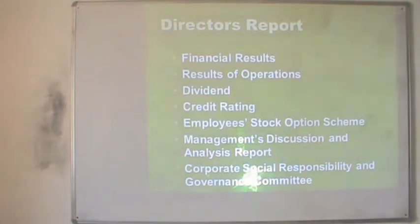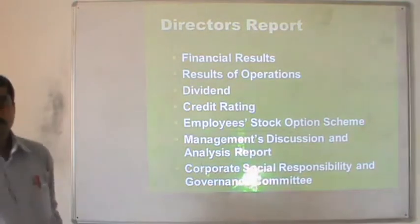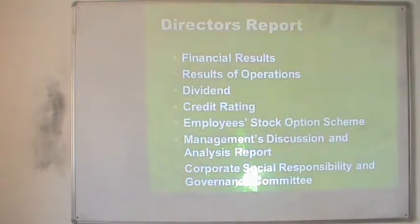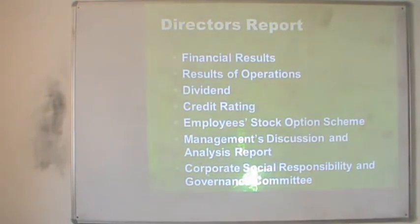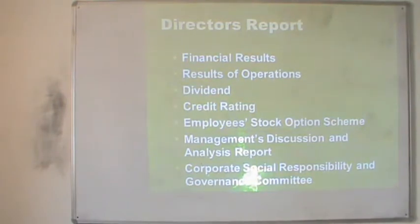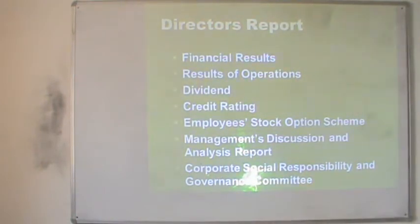Now let us go ahead and check the director's report. The director's report is a conversation between the company's directors and its shareholders. This information includes the financial results of the company — whether the company has earned profit in the last 2-3 years, whether it has increased or decreased, whether the company has opened a new plant, increased or decreased production, etc. The financial results show the company's real work and profit. Normally, the financial highlights are given in a table in the director's report.